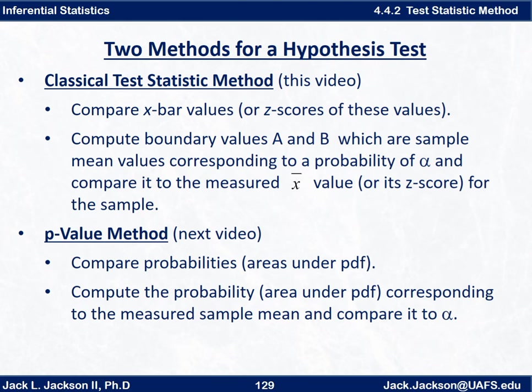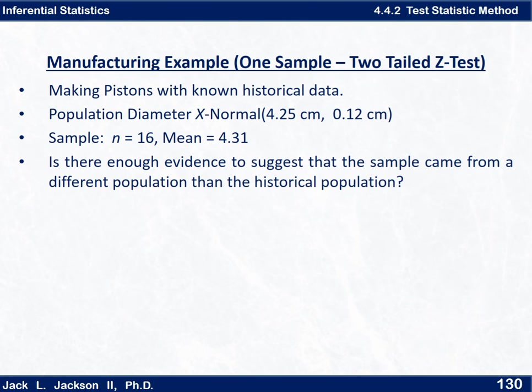So in this video again we're going to talk about the classical test statistic method. Let's start with an example here, and again this is what's called a one-sample two-tailed z-test. Let's suppose we're making pistons with known historical data. We know the population diameter x is normally distributed with mean 4.25 centimeters and standard deviation 0.12 centimeters. We take a sample of size n equals 16 and we find the x-bar or mean of the sample is 4.31.